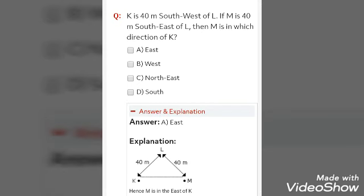So the answer is east. And why is it? Because K is in the south west of L and M is in the south east of L. You will get a triangle like shape from the following question. And you can see hence M is in the east of K.